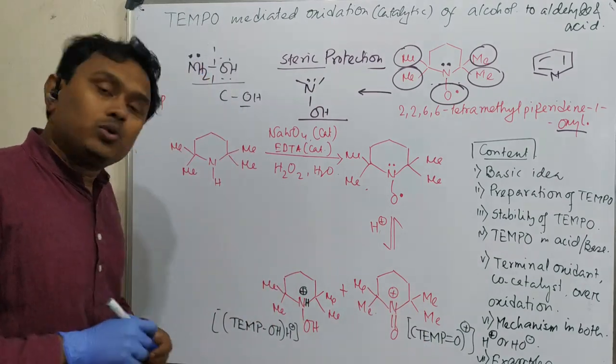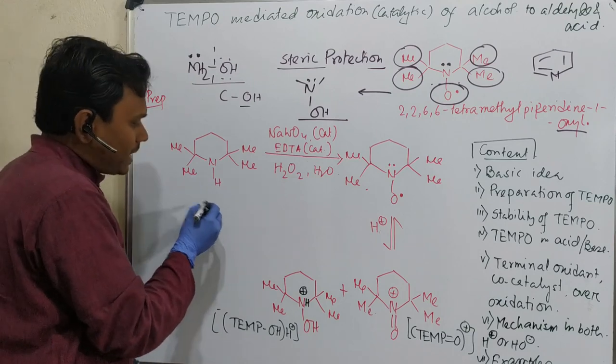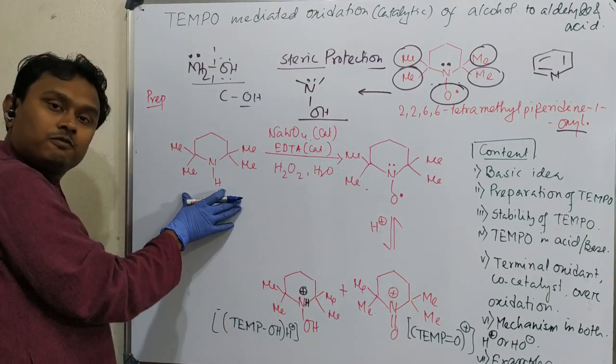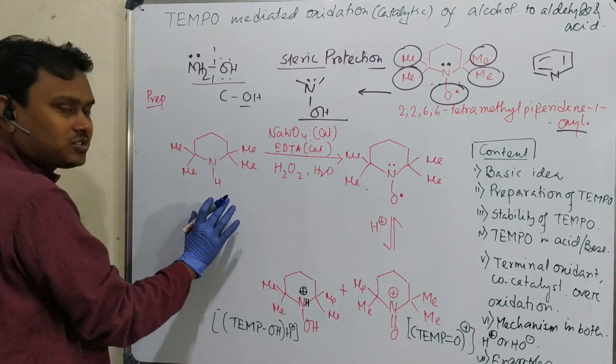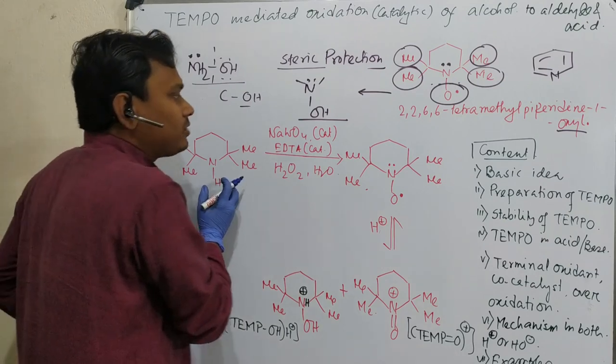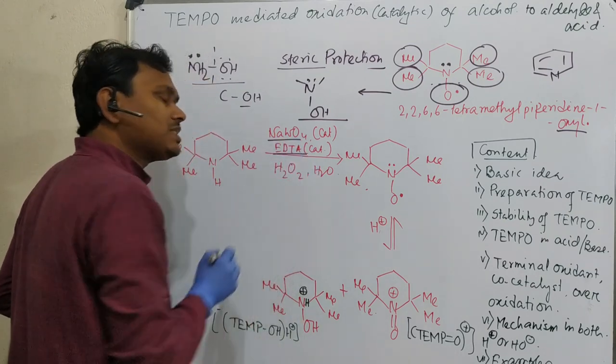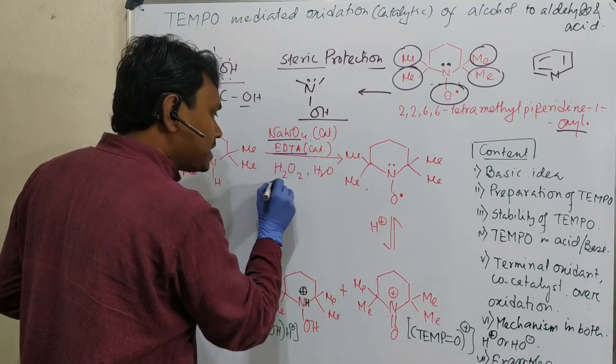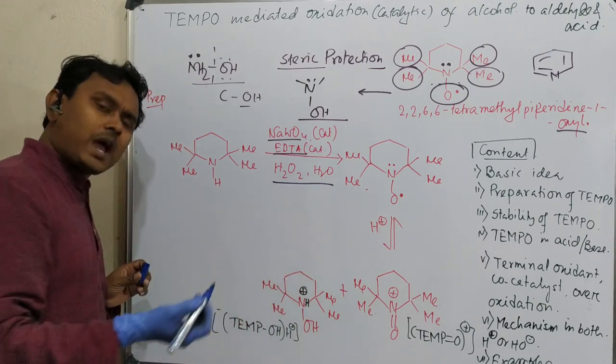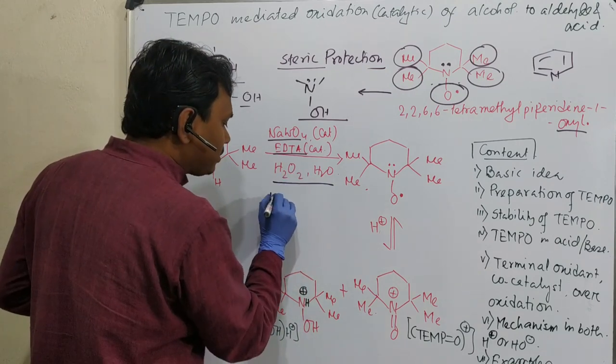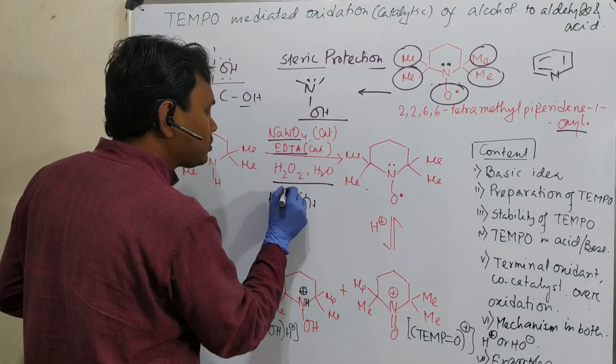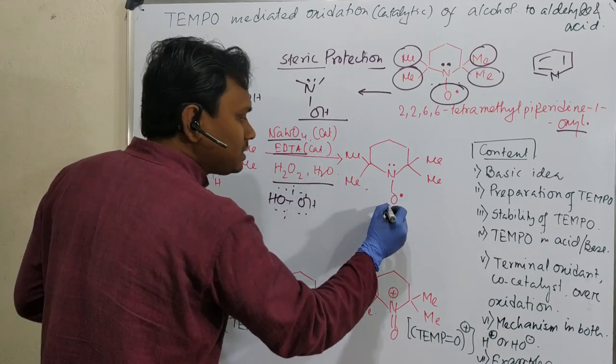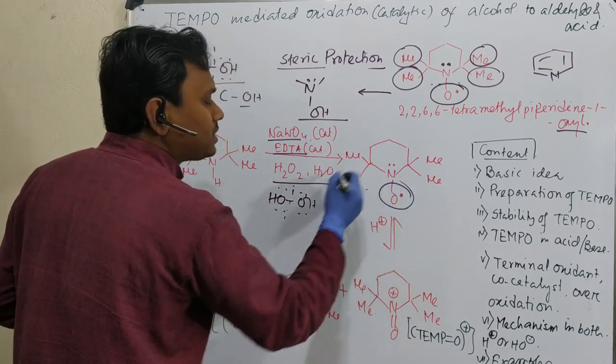So how to prepare this? Preparation could be done by reaction. Its name is 2,2,6,6-tetramethyl-piperidine with NH. In presence of catalytic amount of sodium tungstate and EDTA, means ethylene diamine tetraacetic acid, it is oxidized by hydrogen peroxide. Hydrogen peroxide is responsible for oxidation and ultimately it results in this radical formation that is stable.